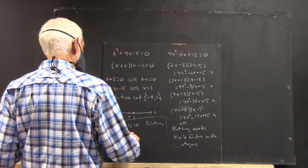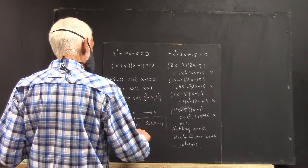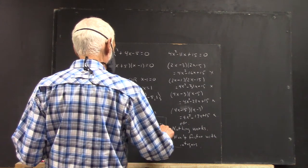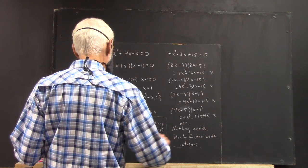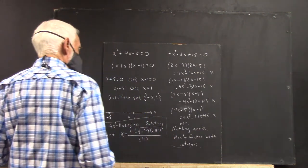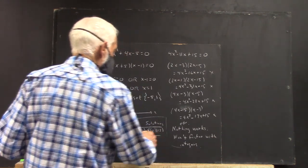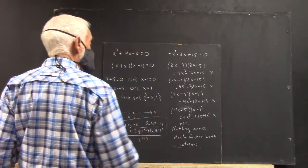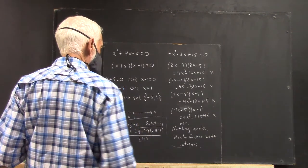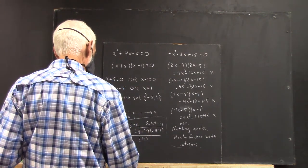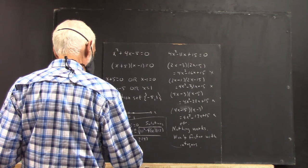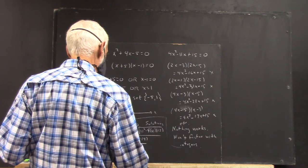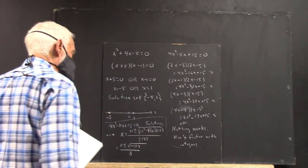The solutions are x equals 11 plus or minus the square root of 11 squared minus 4 times 4 times 15 over 2 times 4. When you evaluate this square root, you get a negative number. Because 4 times 15 is 60. That times 4 is 240. 11 squared is only 121. And you get that negative 119.